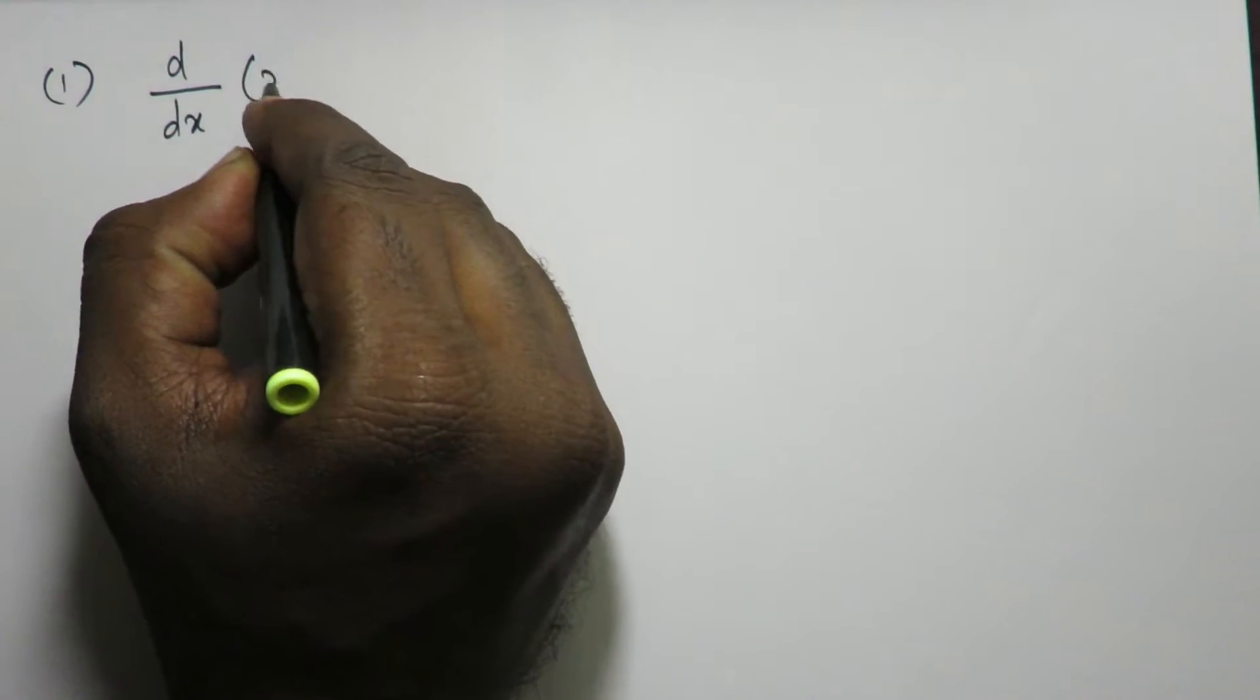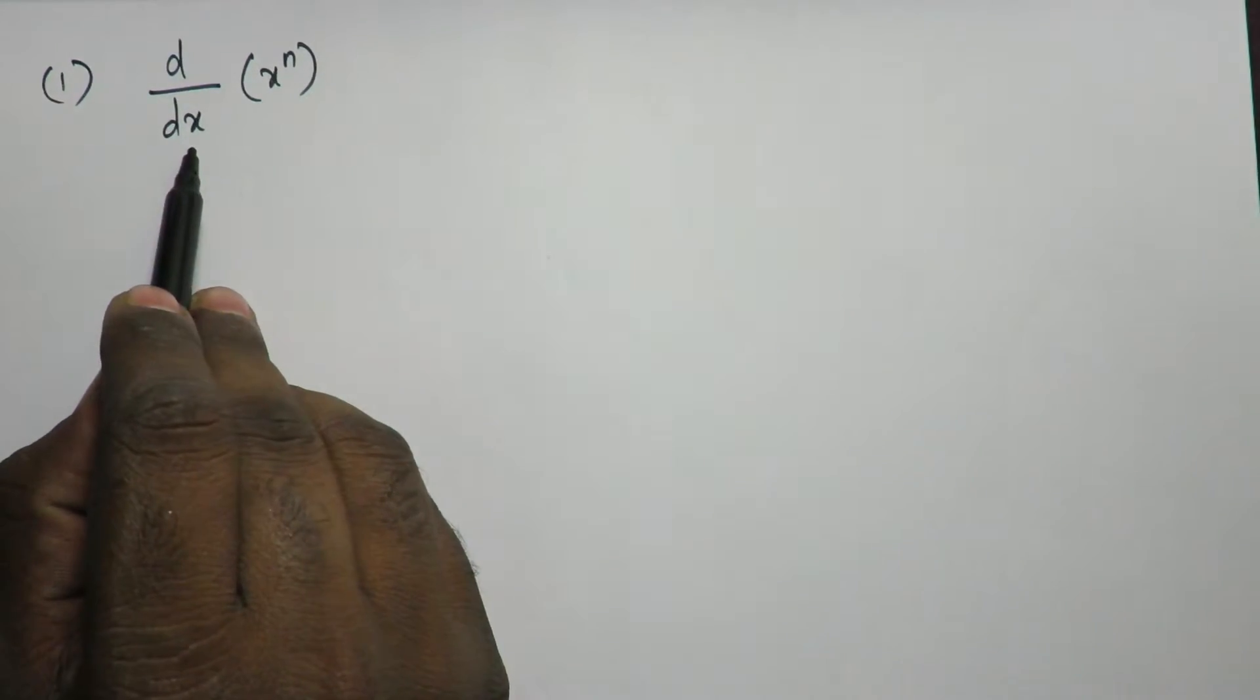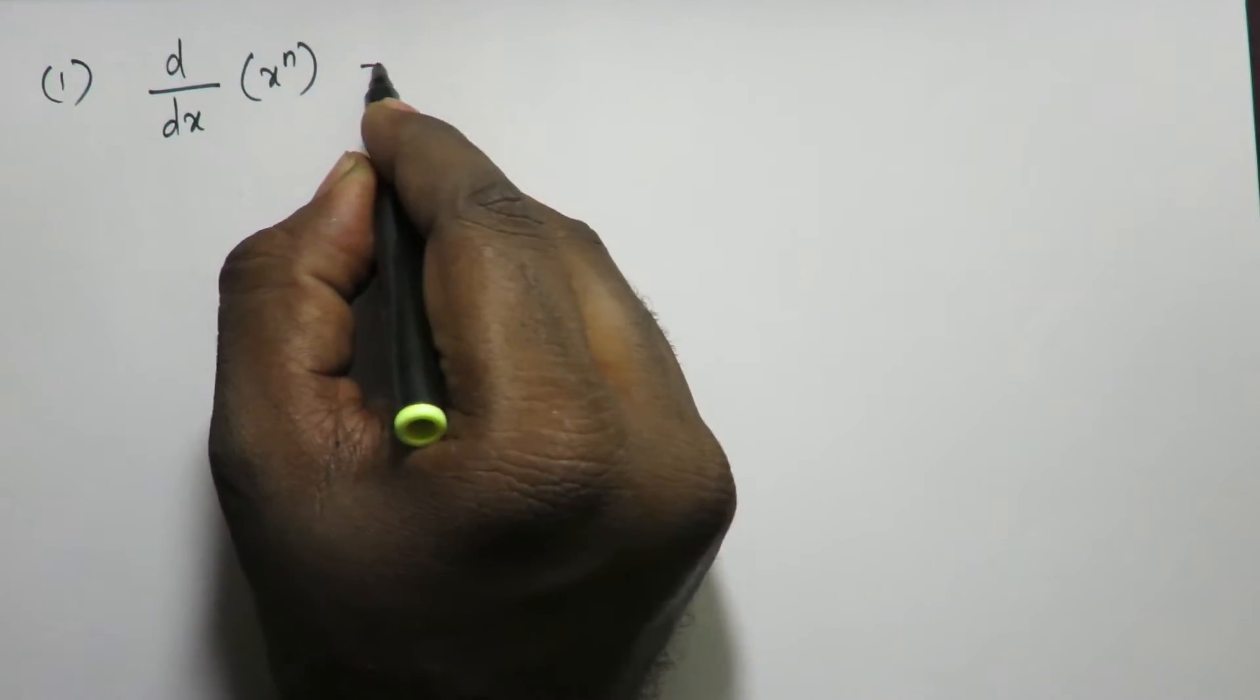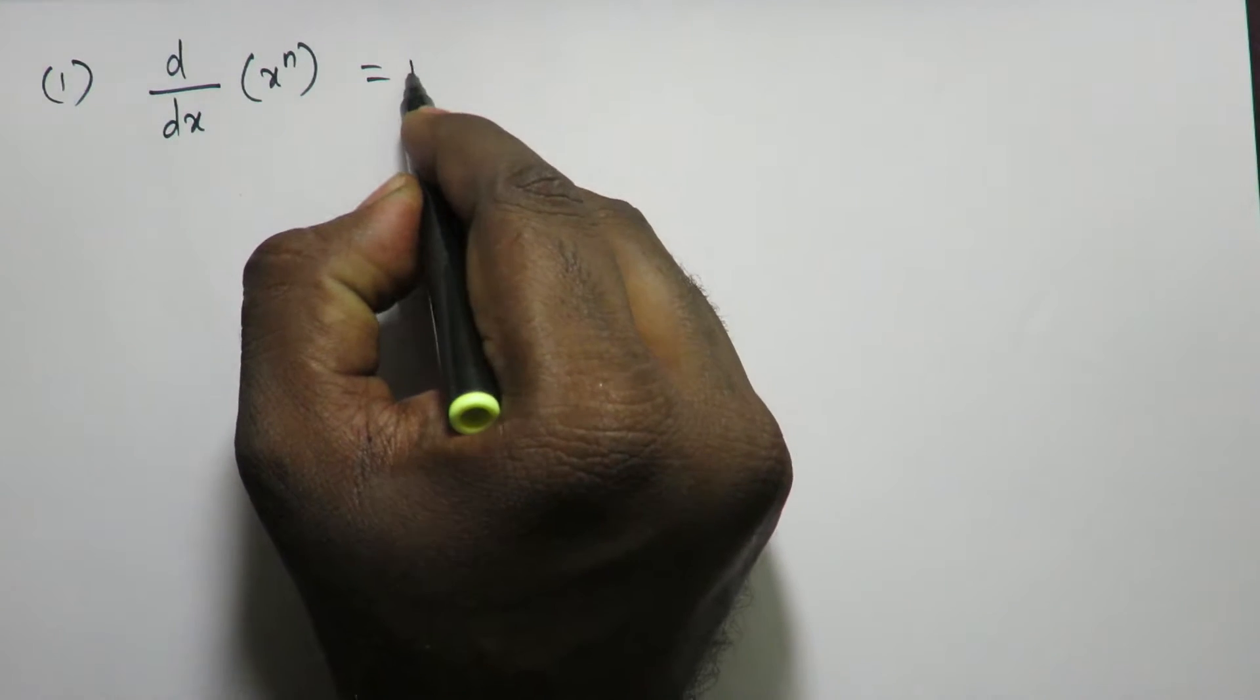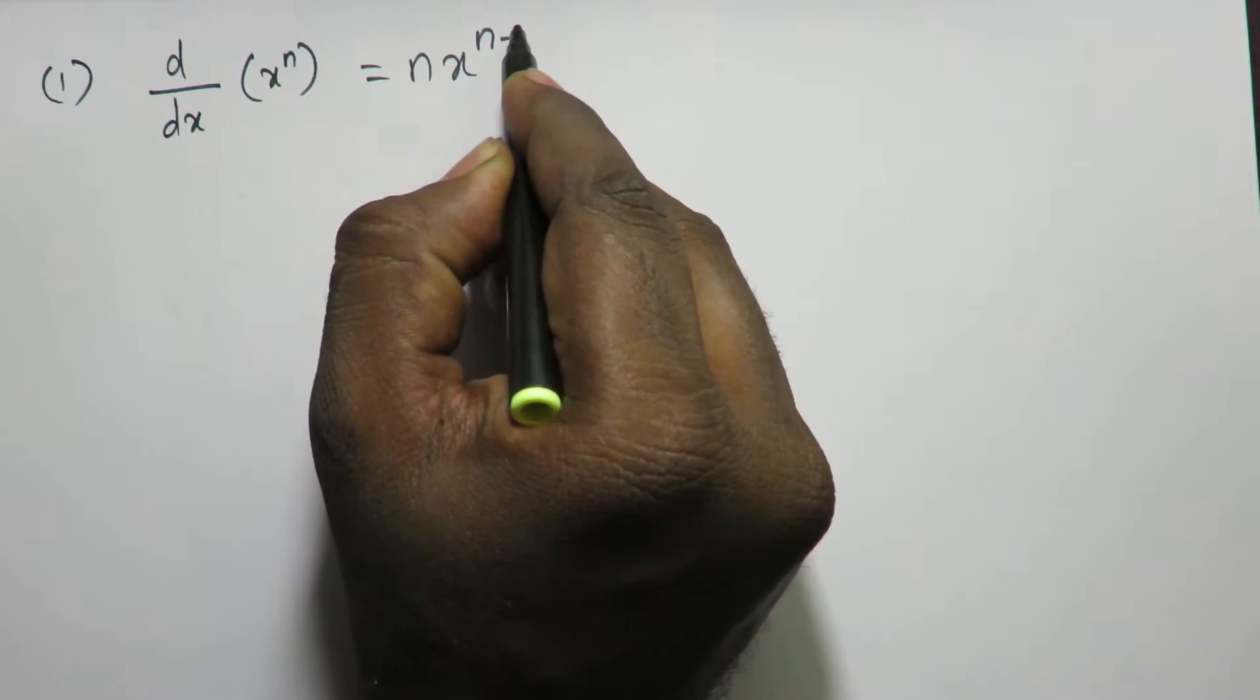Differentiation of x power n with respect to dx is equal to n into x power n minus 1.